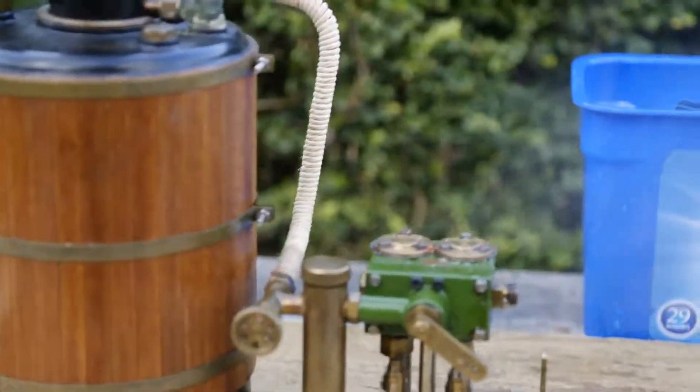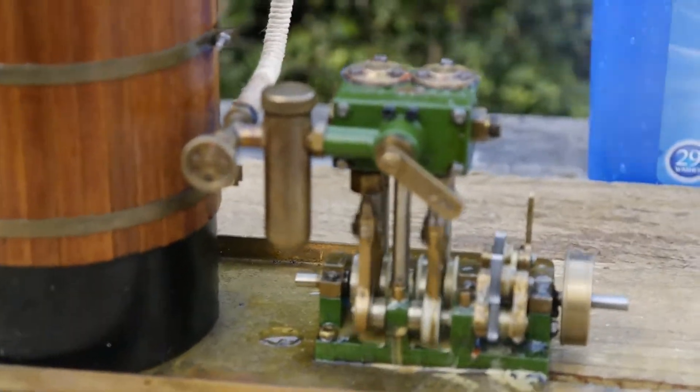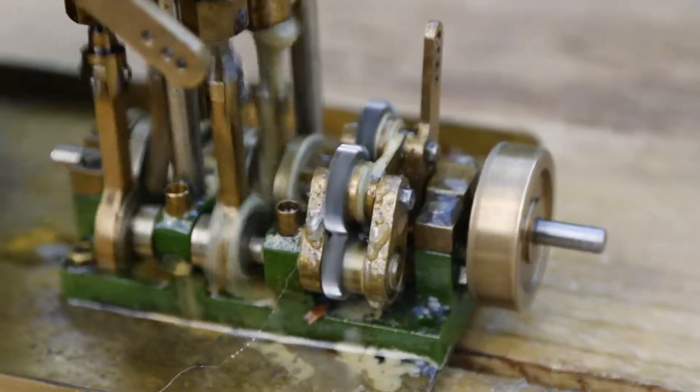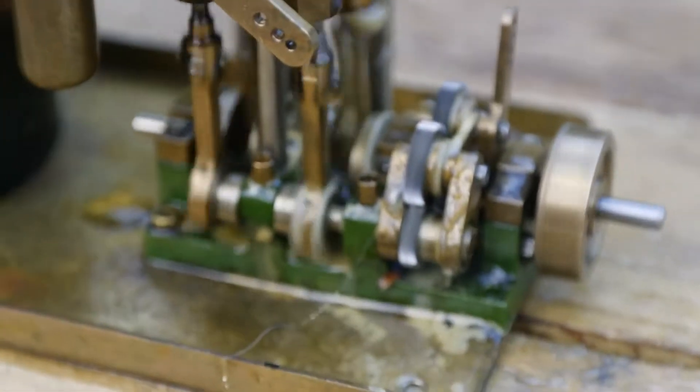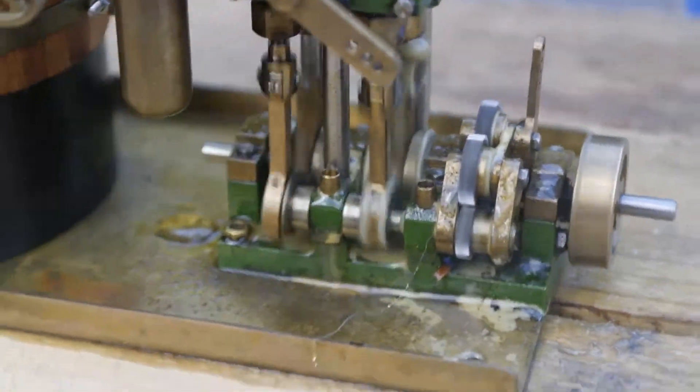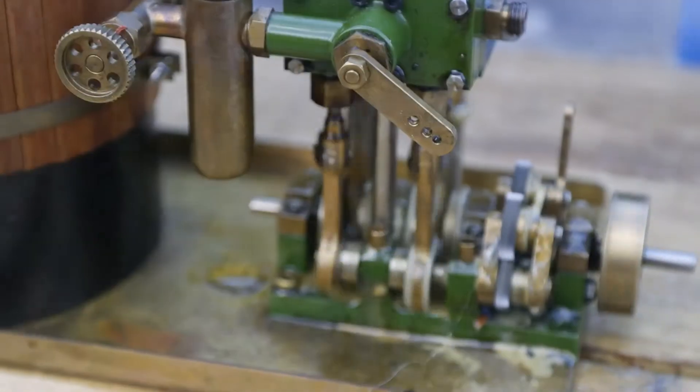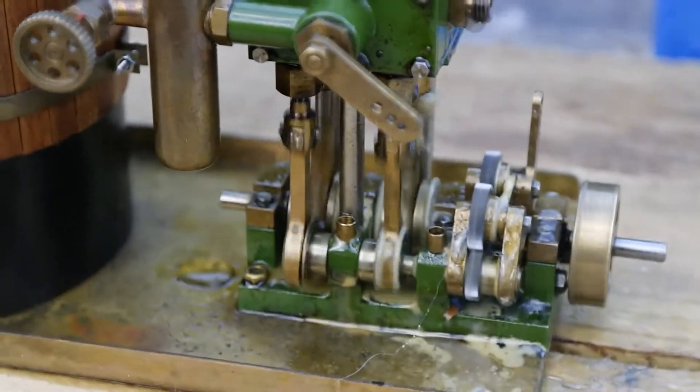It's a 10mm bore and stroke. It's got the Maunley reversing gear system on it, which was passed over to Martin Bayliss company when Cheddar closed.